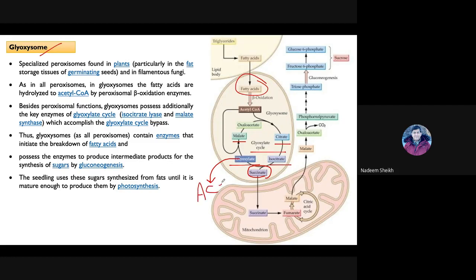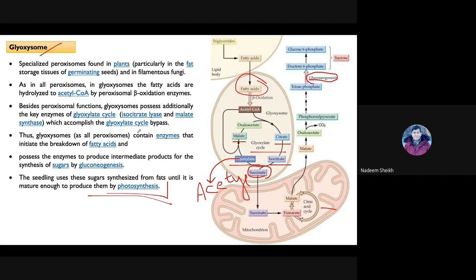Fatty acids metabolized in the glyoxysome enter into the citric acid pathway as acetyl-CoA or fatty acyl-CoA, and the energy produced is used for germination of the seeds until the plants become independent through photosynthesis. The glyoxylate cycle is related to the citric acid cycle, which in turn connects to gluconeogenesis, so that sugars can be produced for use by the seedlings.